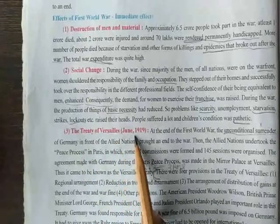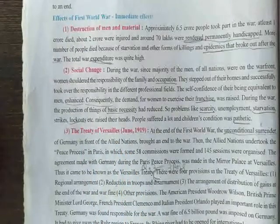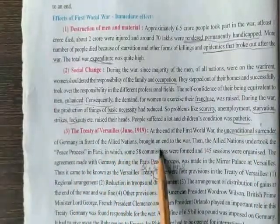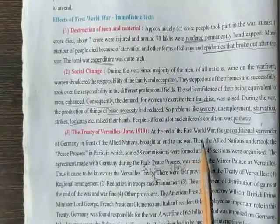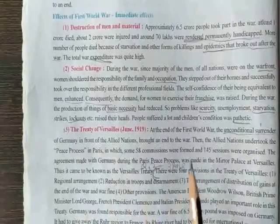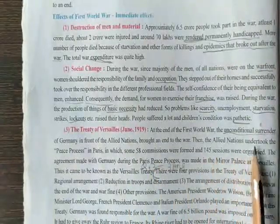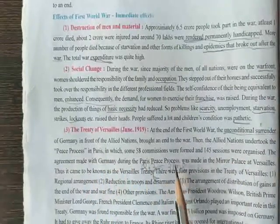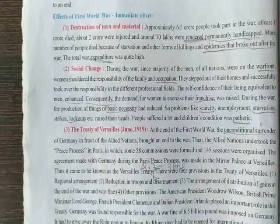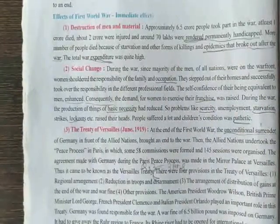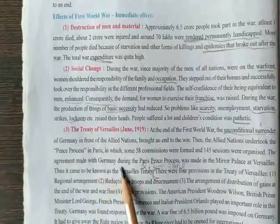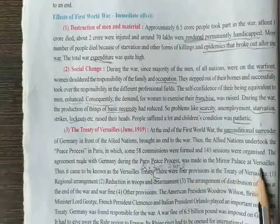The Treaty of Versailles, June 1919. At the end of the First World War, the unconditional surrender of Germany to the Allied nations brought an end to the war. The Allied nations undertook the peace process in Paris, in which 58 commissions were formed and 145 sessions were organized. The agreement made with Germany during the Paris peace process was signed at the Palace of Versailles, and thus it is known as the Treaty of Versailles.